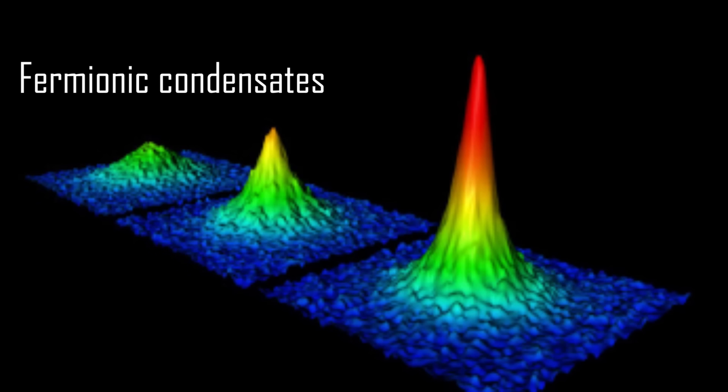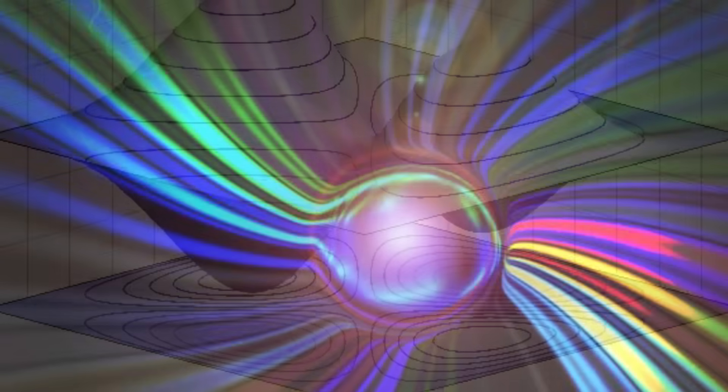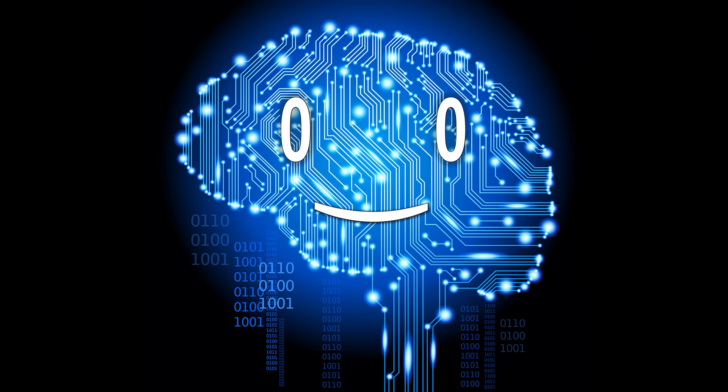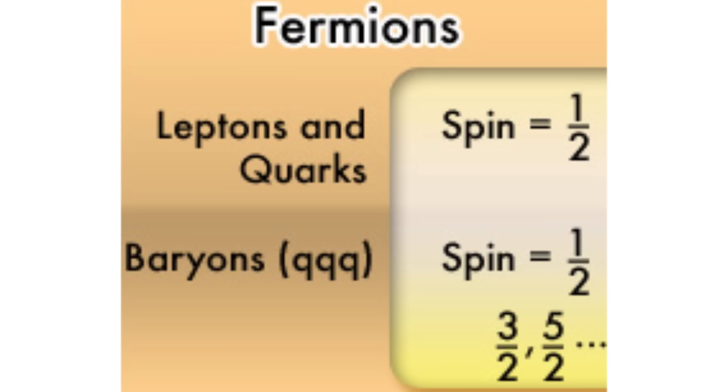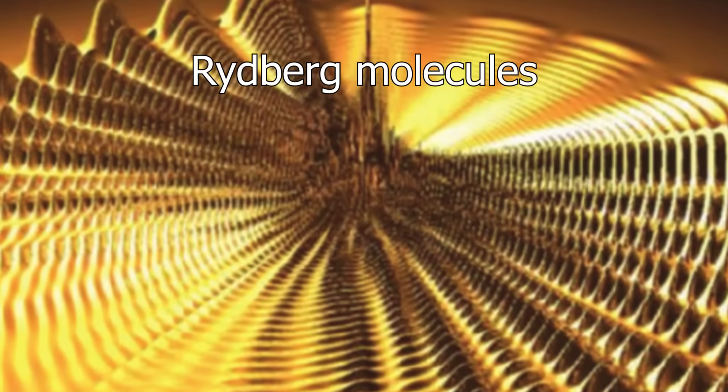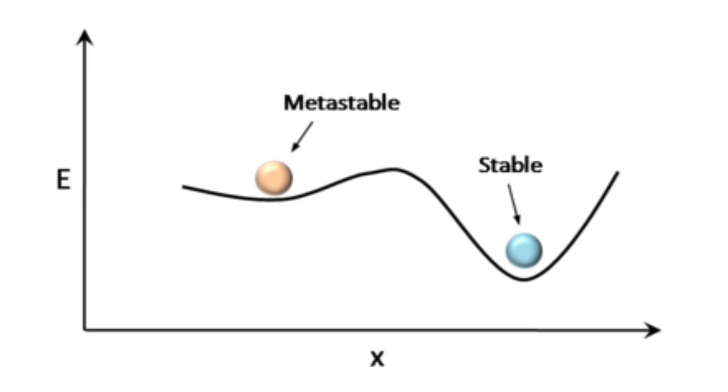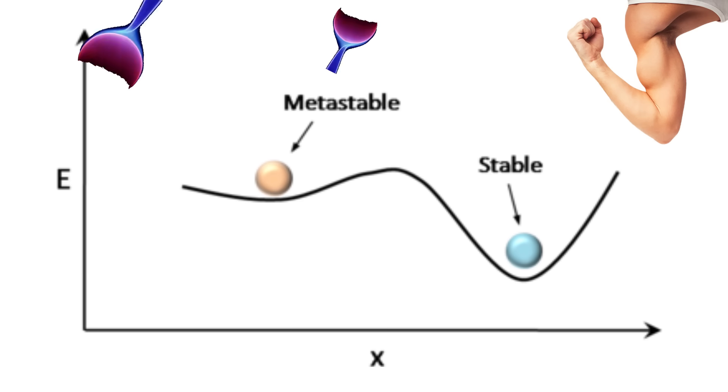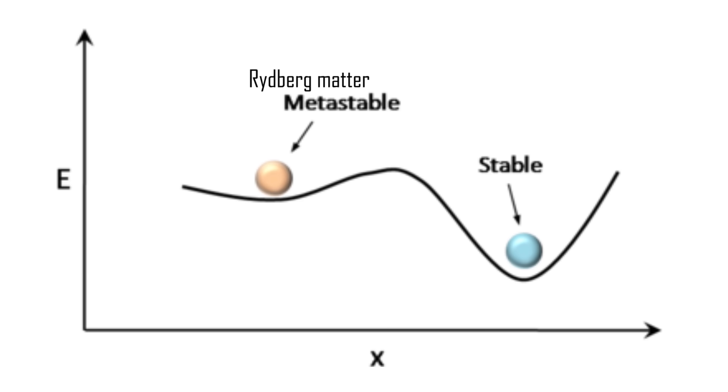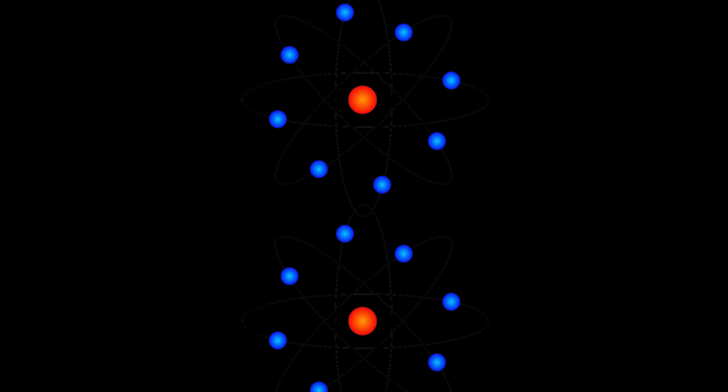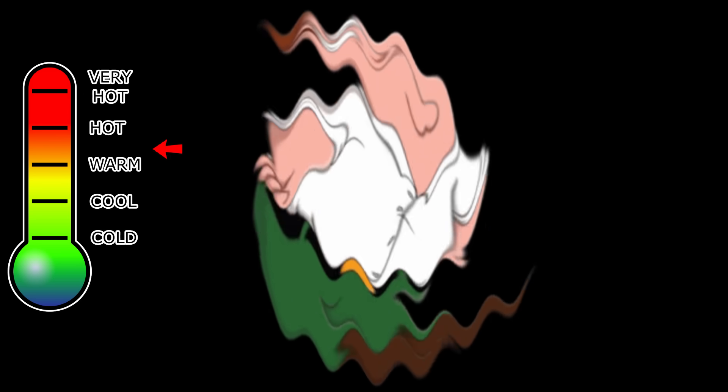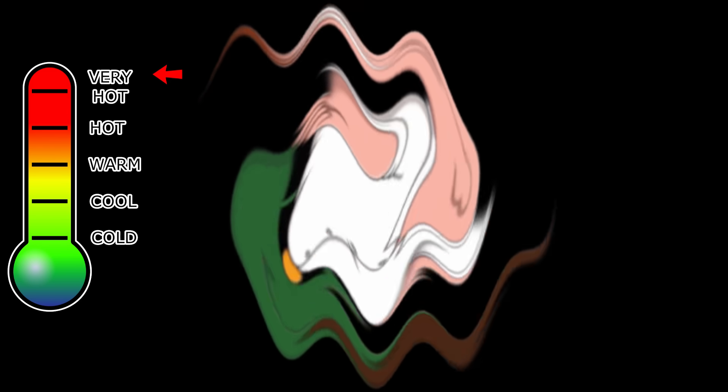Fermionic condensates, pretty similar to the Bose Einstein condensate but composed of fermions, particles that generally have half-odd integer spins. Rydberg molecules. One of the metastable states of strongly non-ideal plasma is Rydberg matter, which forms upon condensation of excited atoms. These atoms can also turn into ions and electrons if they reach a certain temperature.